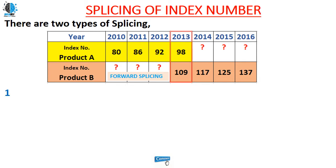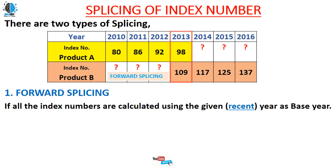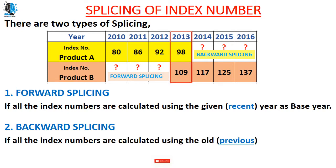Forward splicing means all index numbers are calculated using the recent year as a base year. Between 2010 and 2013, the recent year is 2013, so constructing the index with 2013 as the base year is called forward splicing. Backward splicing means all index numbers are calculated using the old or previous year as a base year. For example, to find the index numbers for 2014, 2015, and 2016 for product A, we take the previous base year 2010 — constructing the index on the basis of 2010 is called backward splicing.